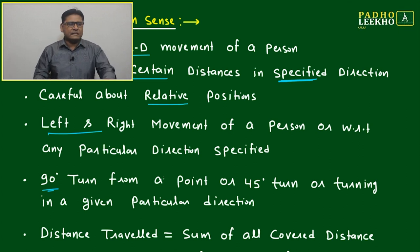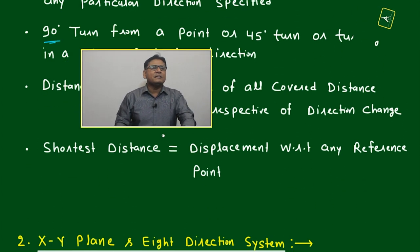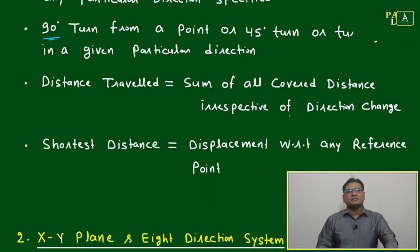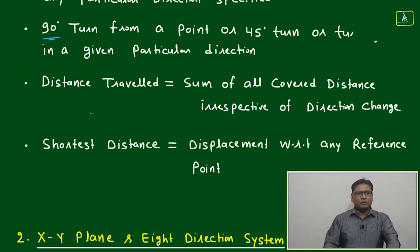Distance traveled equals the sum of all distance covered, irrespective of direction change. If you know a little bit of physics, distance is a scalar, not a vector quantity. It will just add all the values whatever we have traveled.